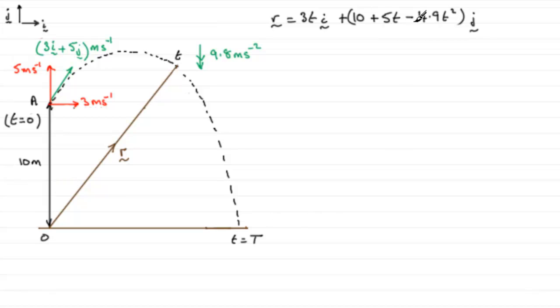So all we need to do is substitute t equals big T into here and make this component equal zero. So before I start, when t equals big T we know that this must equal zero, so 10 + 5T - 4.9T² = 0.